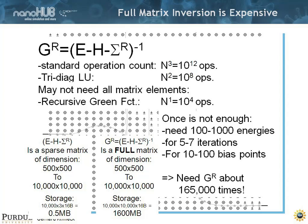And you do that for 10 to 100 bias points to resolve an IV. So you need this GR about 200,000 times. Even if you did your HERA experiment and did this through a full inverse, which you can do in MATLAB for small matrices, you really don't want to do that.